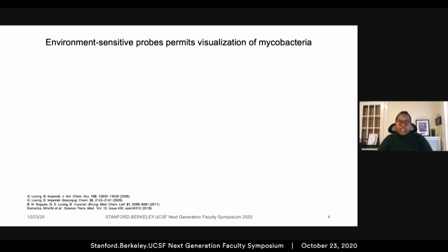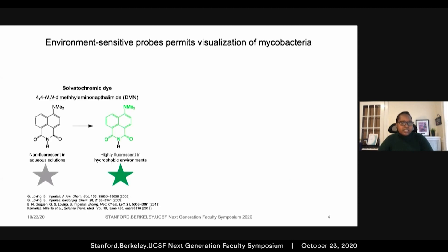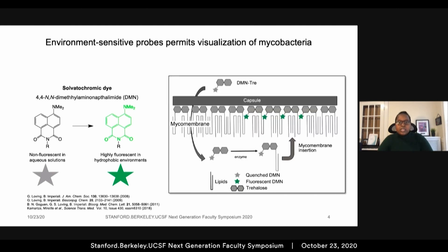We hypothesized that environment-sensitive probes would prove very useful for us. Solvatochromic dyes, as the name suggests, are molecules that can change color based on the surrounding environment. Particularly, DMN has been shown to be non-fluorescent in aqueous solutions and highly fluorescent in hydrophobic solutions. We reasoned that the metabolic incorporation of DMN-trehalose conjugates, DMN-tre for short, and their subsequent integration into the hydrophobic mycomembrane would activate its fluorescence and enable the detection of MTB cells without the need to wash away unmetabolized probes.